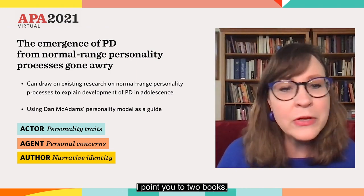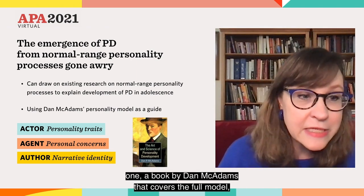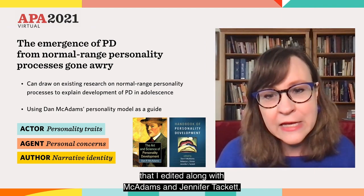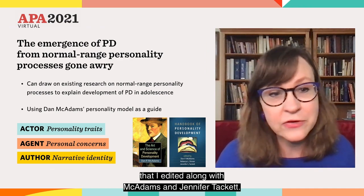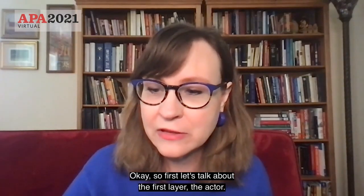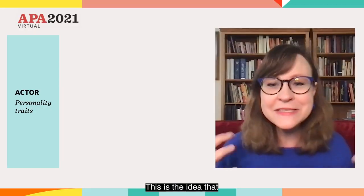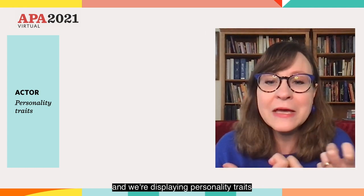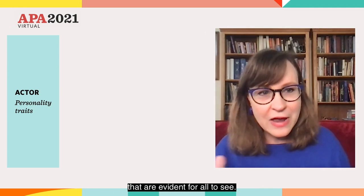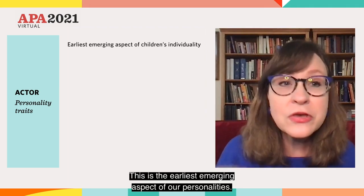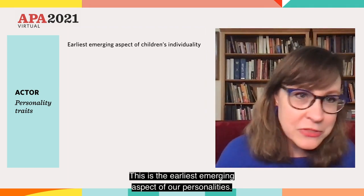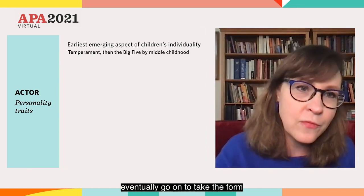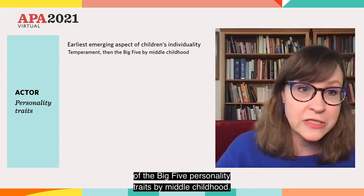If you're curious about the model, I point you to two books: one, a book by Dan McAdams that covers the full model, and then the second, an edited handbook that I edited along with McAdams and Jennifer Tackett. So first, let's talk about the first layer, the actor. This is the idea that even as children, we are actors on the stage of our lives, displaying personality traits that are evident for all to see. This is the earliest emerging aspect of our personalities. We think of it as temperament in childhood, but those temperament traits eventually go on to take the form of the Big Five personality traits by middle childhood.